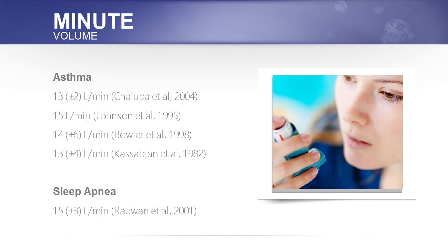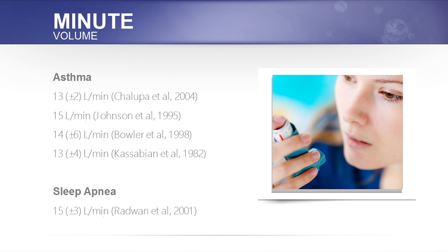When we consider normal breathing volume, it is four to six liters of air per minute. We know that people with breathing disorders including asthma are breathing 10 to 15 liters per minute. People with sleep apnea are also breathing 10 to 15 liters of air — so people who are snoring and people with sleep-disordered breathing are breathing too much.